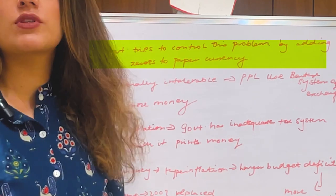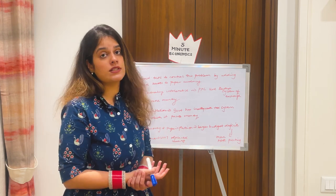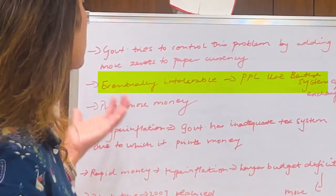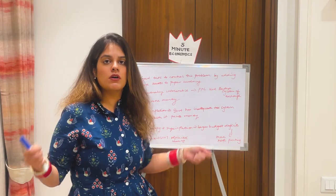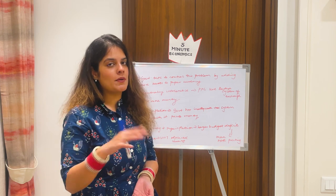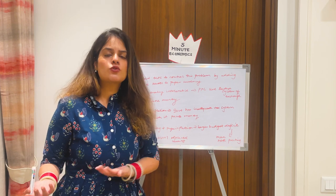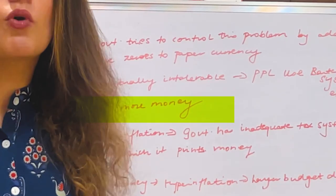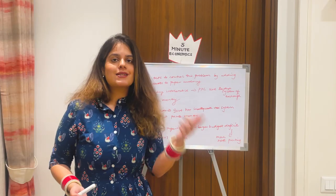The government tries to control this problem by adding more zeros to paper currency — basically printing bigger notes — because the value of money has fallen so much. Eventually, when hyperinflation becomes intolerable, people can't carry sacks of money just to buy tomatoes, and they tend to revert to the barter system of exchange. Government keeps printing more money because there is a perceived lack of it — so much money is needed to buy so many things. But as I said, it's a vicious circle.